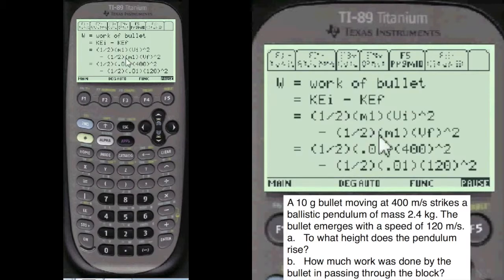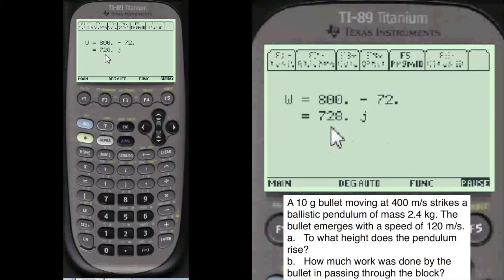As far as the work goes, the work of the bullet is the kinetic energy of the initial minus the kinetic energy of the final, which equates to the total work. And the kinetic energy is one-half mass times velocity squared. Initial velocity, final velocity, 728 joules.